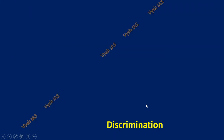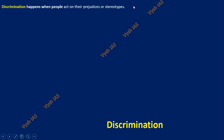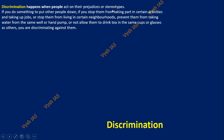So now the topic for today: discrimination. Why I told all these is because discrimination happens when people act on their prejudice and stereotypes, which we just discussed. If you do something to put other people down, stop them from taking part in certain activities or jobs, stop them from living in a certain neighborhood, prevent them from taking water from the same well or hand pump, or not allow them to drink tea in the same cup or glass — all these are discrimination.